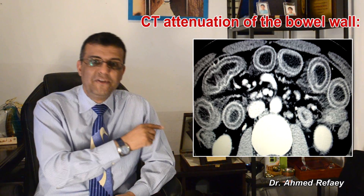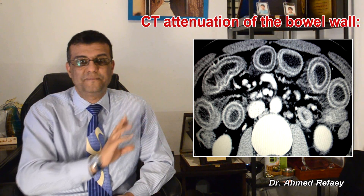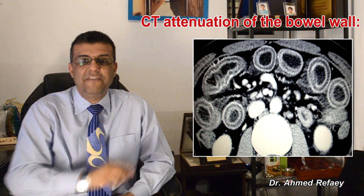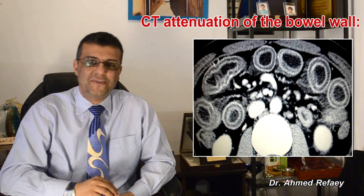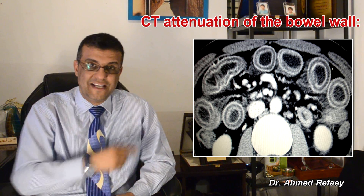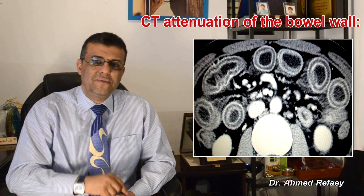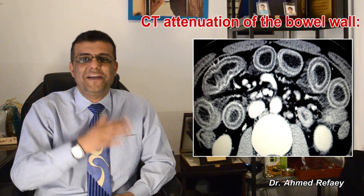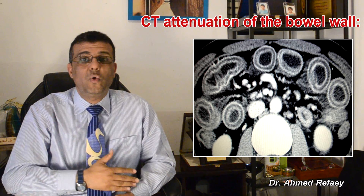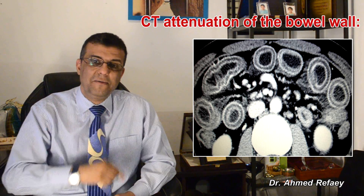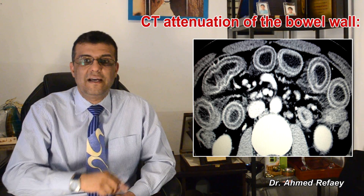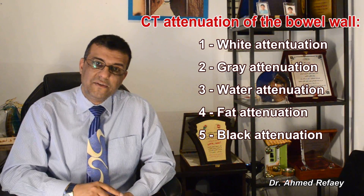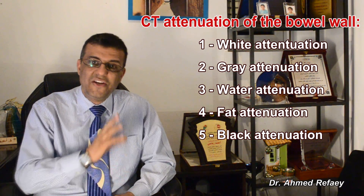The third category is water attenuation. As you see in this image, there is fluid attenuation of the submucosa with enhancement of the mucosa and serosa, giving the appearance of a water halo sign or target sign. The differential diagnosis in cases of water attenuation is wide and can include all types of colitis; however, inflammatory bowel disease and ischemic bowel disease are at the top of the list.